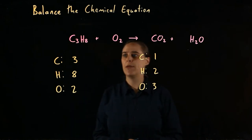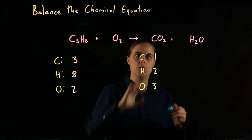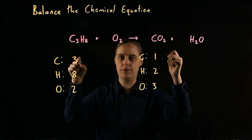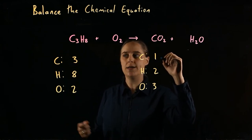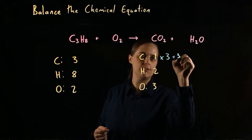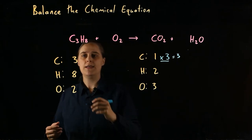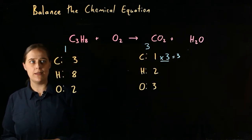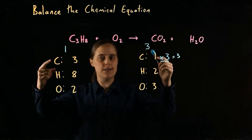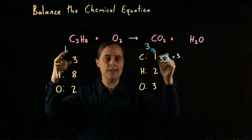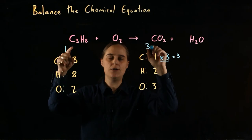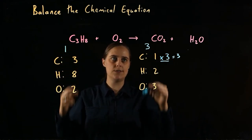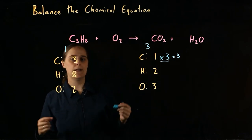Let's look at carbon. Three carbons in propane, one in carbon dioxide. How many carbon dioxide molecules do we need to get three carbon atoms total? One times three equals three — so we need three molecules of carbon dioxide per one molecule of propane. That ratio balances carbon. They might be one to three, two to six, or three to nine, but we know the ratio.